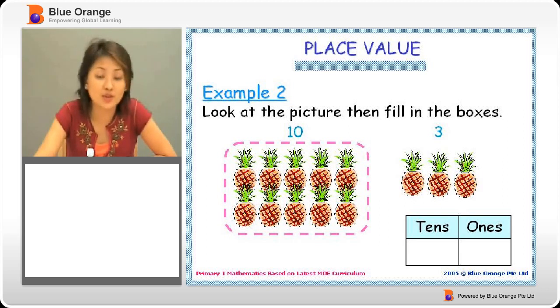Next, we have 13. This is 1 ten. 13 is a group of 10, so it's 1 ten. So 1 ten and 3 individual, so 3 ones. So we have 1 ten and 3 ones. That makes 13. 1 ten and 3 ones.